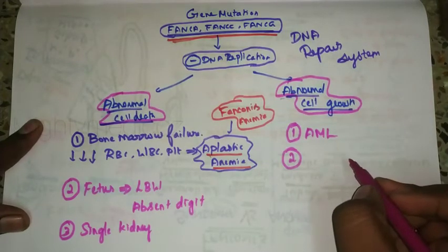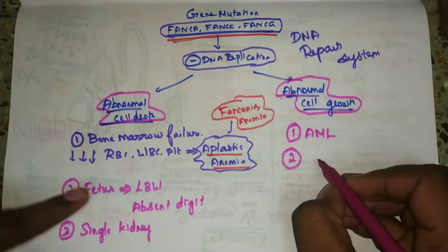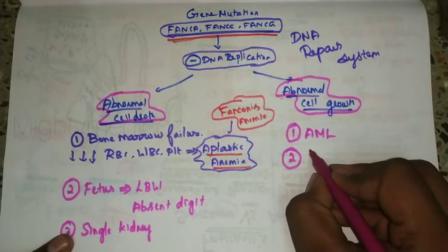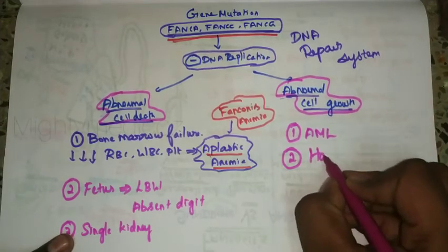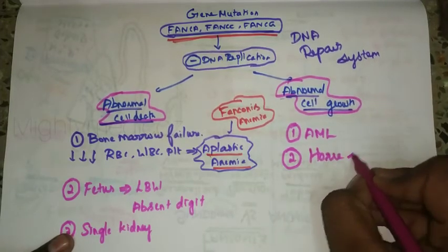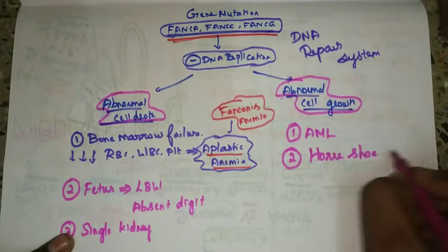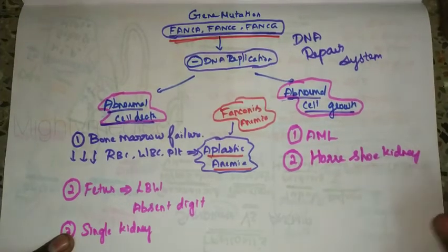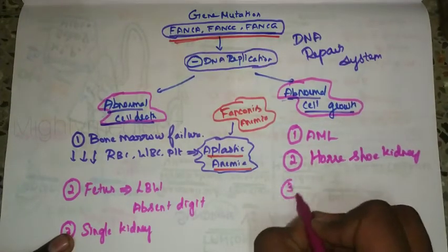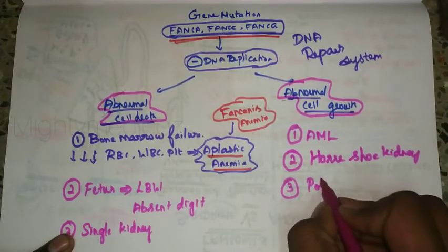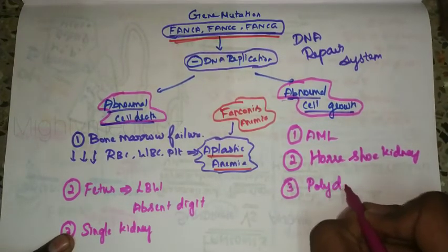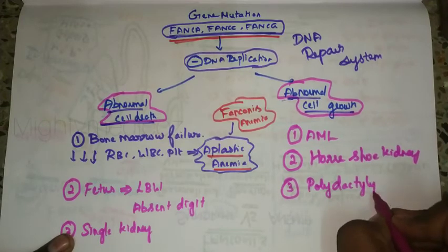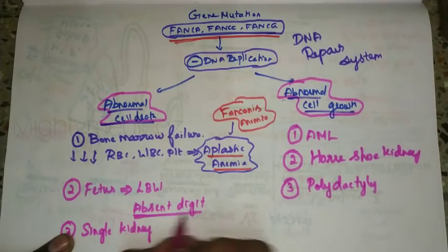Other features include a single kidney, horseshoe kidney, and polydactyly or absent digits.